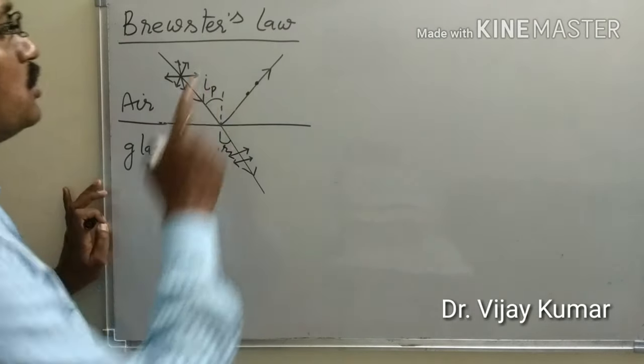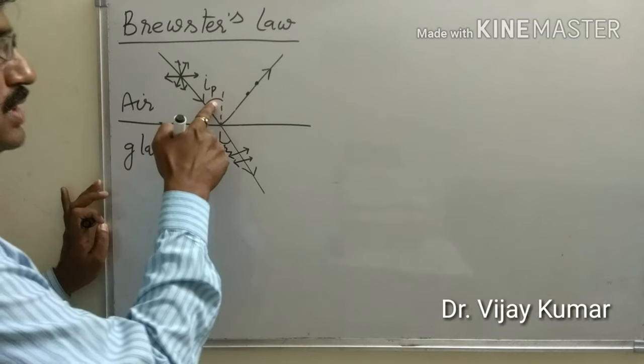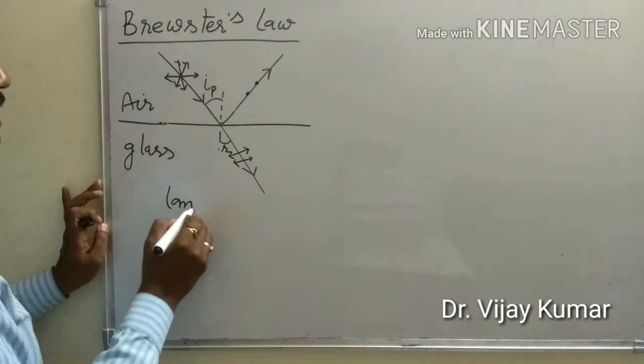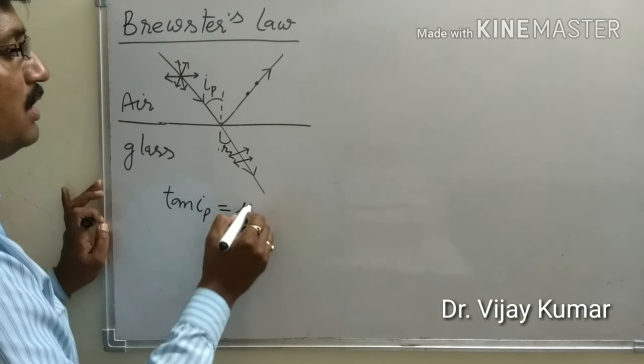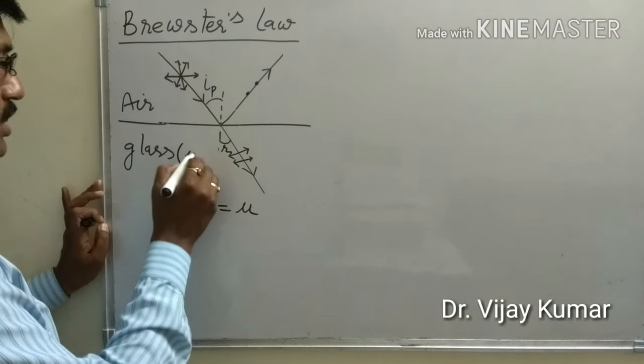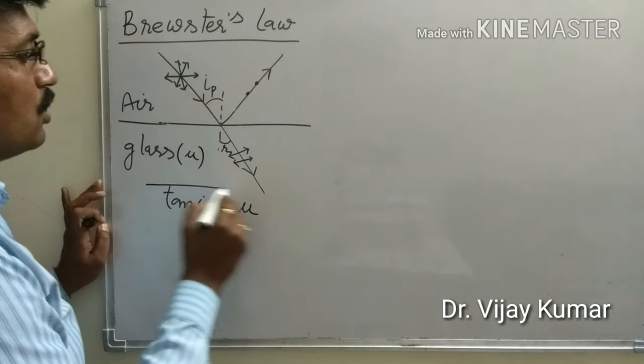As per Brewster's law, tangent of this angle of polarization means tan ip is equal to the refractive index of the glass. Suppose it is mu. This is Brewster's law.